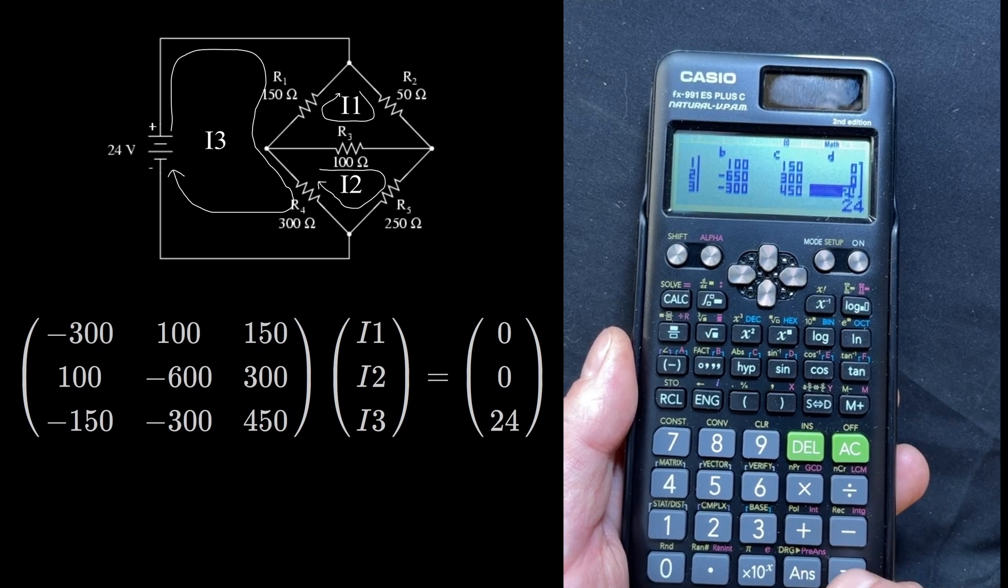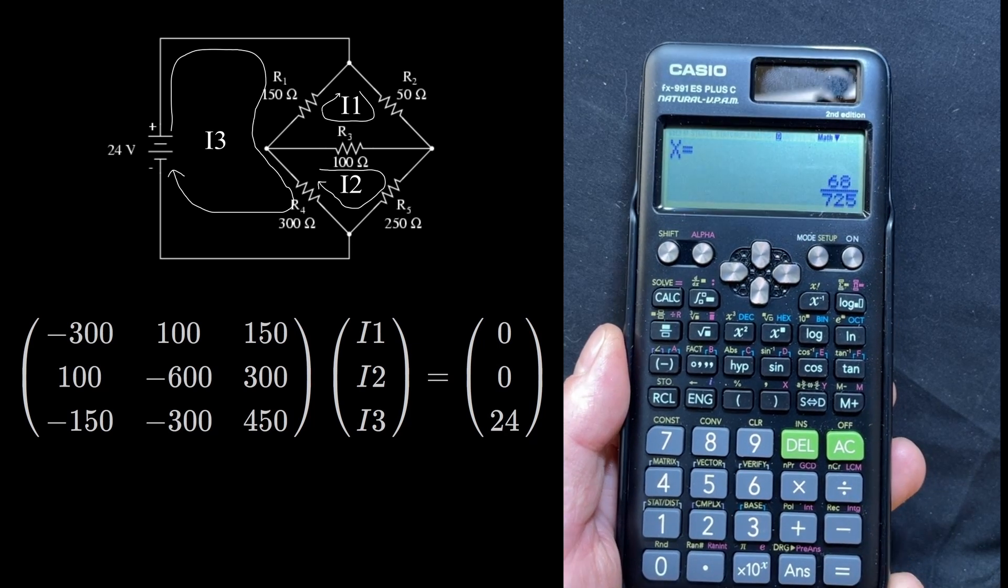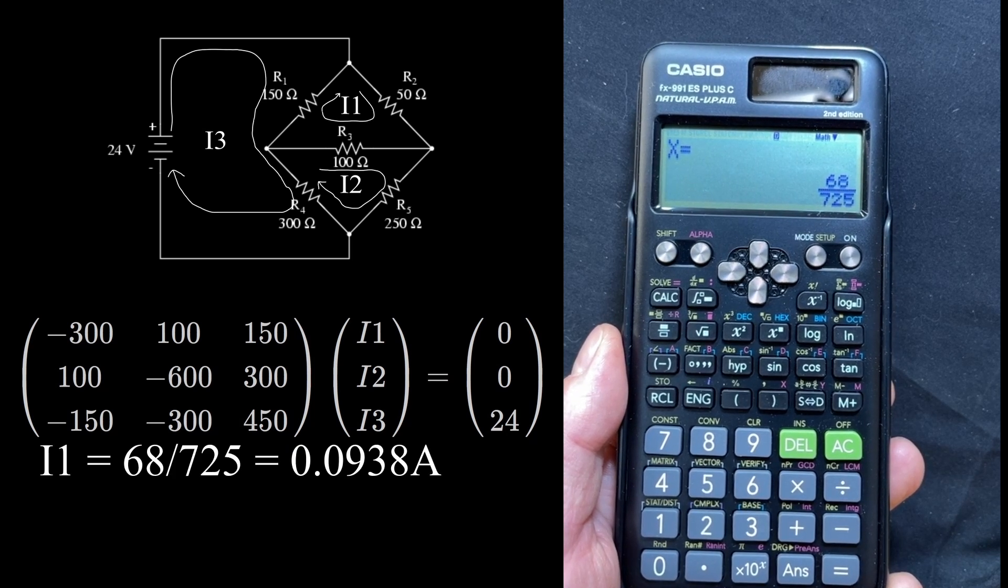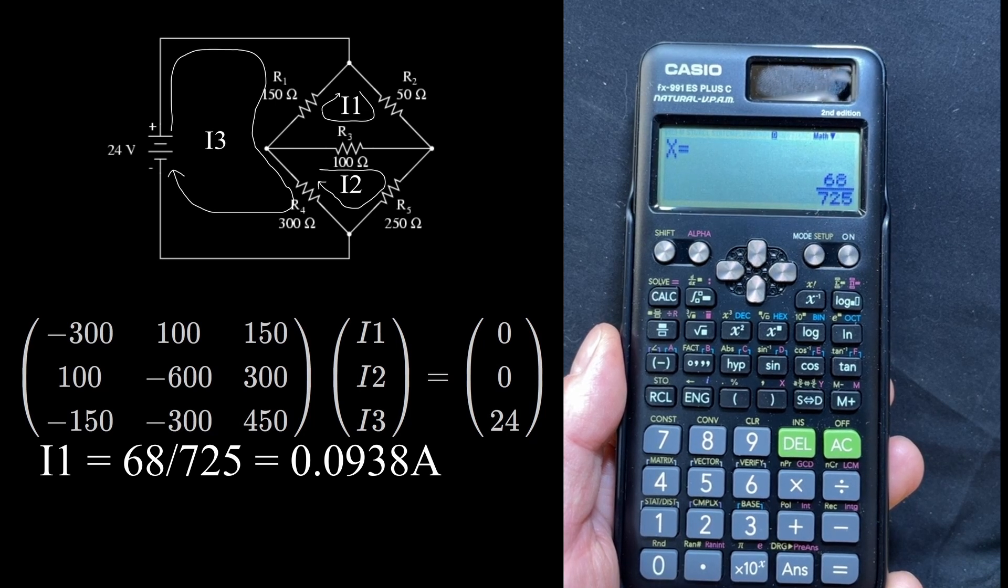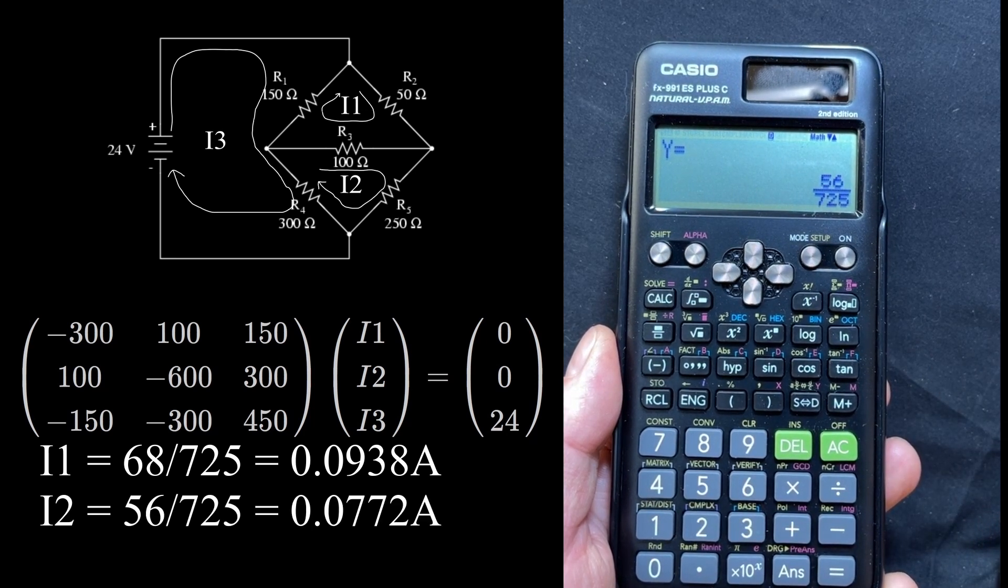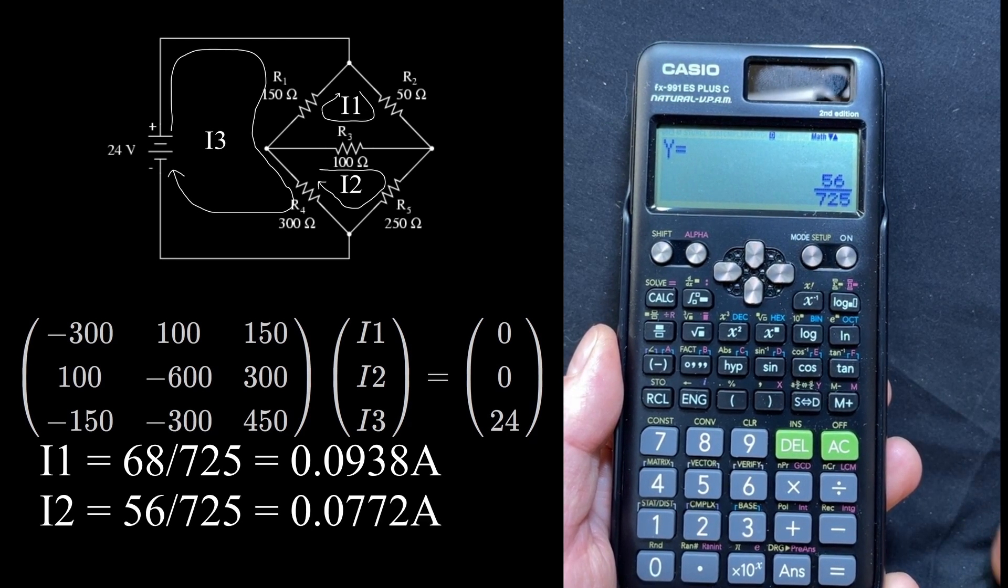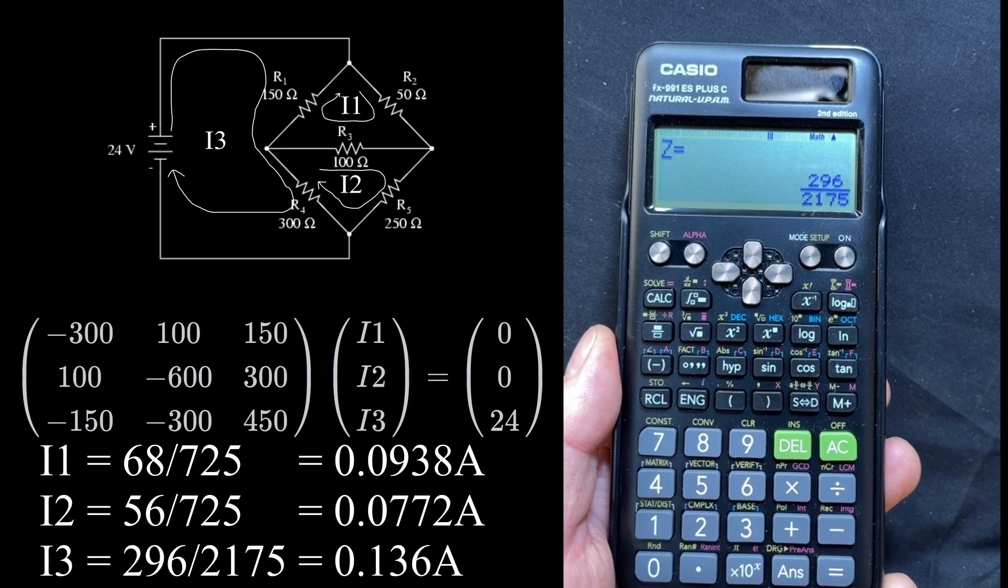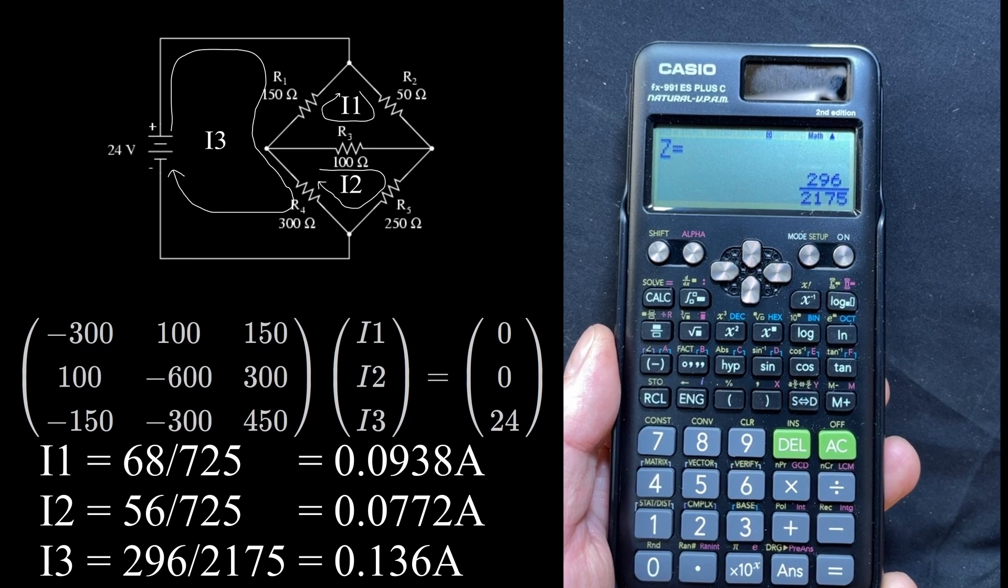And now if I hit enter, and I get my values. X is my I1, 68 over 725, which if you plug that into a calculator, you'll find that it's 92 point whatever milliamps it's supposed to be. Y, this is I2, 56 over 725, about 77 milliamps. And Z, 296 over 2175. So this is the 136 milliamps for I3.